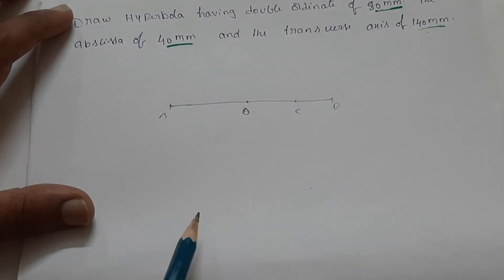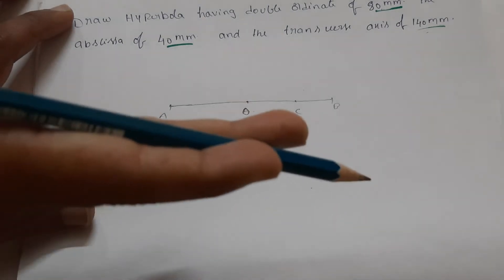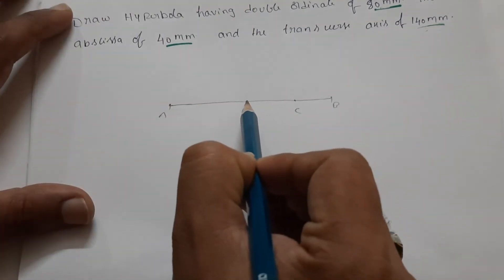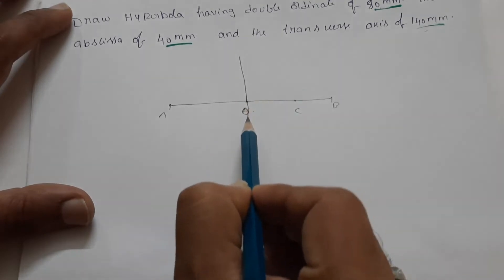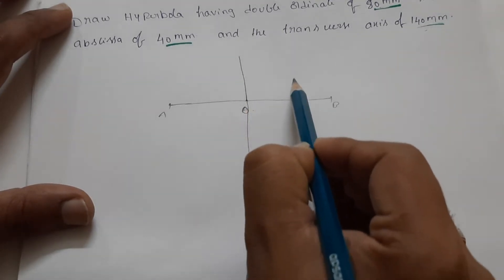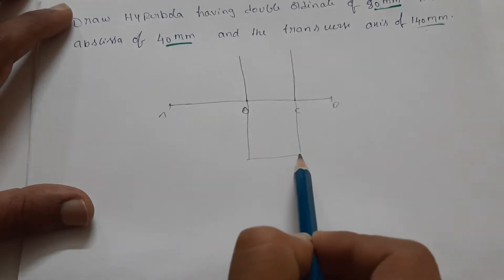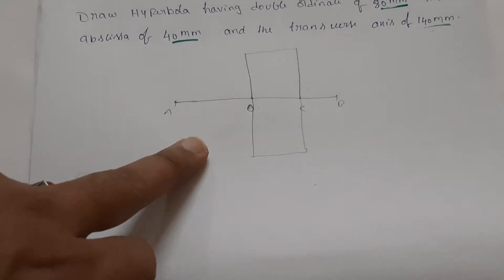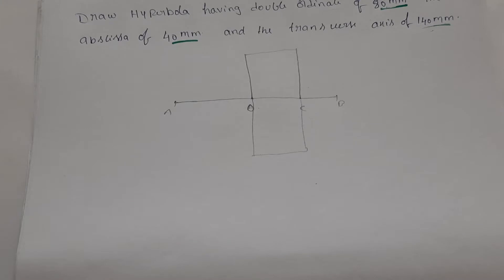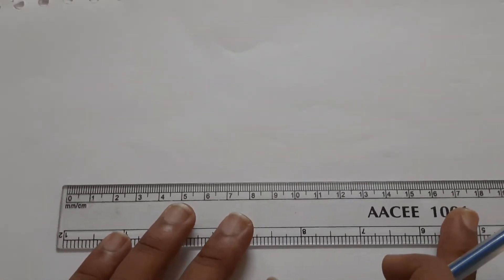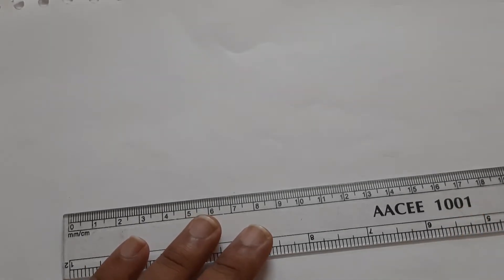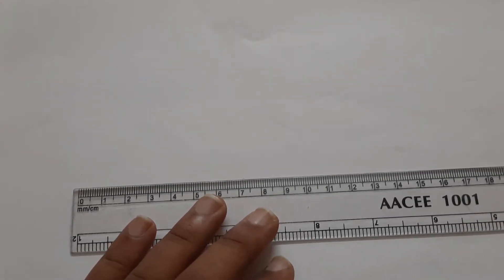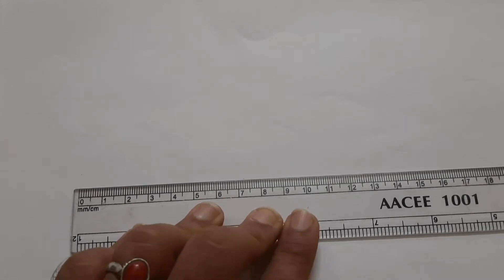Now, what about double ordinate? Double ordinate — 80 mm, split as 40 and 40. C is 40, making this a rectangular section. So first we draw this section. As usual, first of all we have the transverse axis. We indicate the length — that is 140 mm — so we have to scale 140 mm and indicate it.